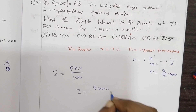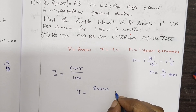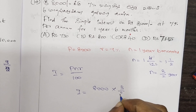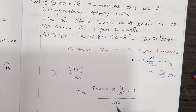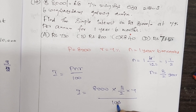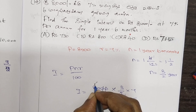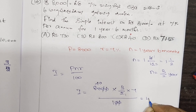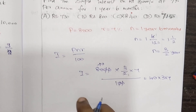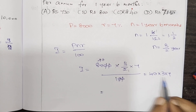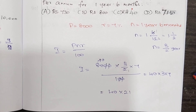I equals PNR by 100. Principle amount is at least 8,000. N is 3 by 2, R is 7, all divided by 100. That gives us 40 into 3 into 7. I equals 60 into 3 into 7, divided by 20 and 1.